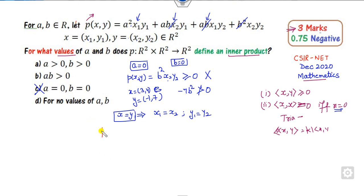If you substitute this value in the given function p, it becomes a²x₁y₁ + abx₁y₁ + a²x₁y₁ + abx₁y₁ + abx₁y₁ + b²x₁y₁, which equals (a+b)²x₁y₁. Now here x equals y, meaning we're working on the property where they are the same.